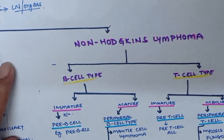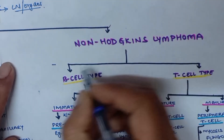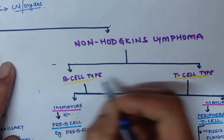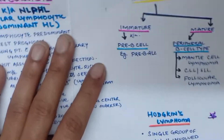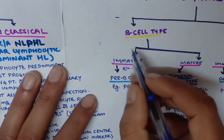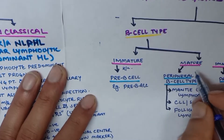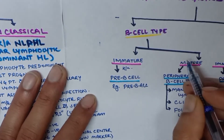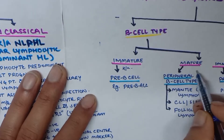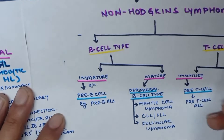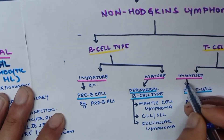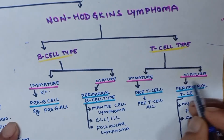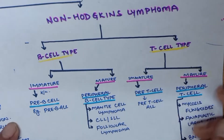Non-Hodgkin's lymphoma is classified into B-cell type and T-cell type. B-cell type is further classified into immature and mature B-cell type. Similarly, T-cell type is also further classified into immature and mature T-cell type.